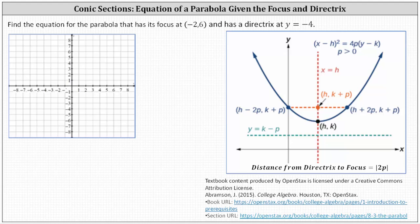We're asked to find the equation for the parabola that has its focus at negative two comma six and has a directrix at y equals negative four. Let's go ahead and plot the focus, negative two comma six. The directrix is a horizontal line, y equals negative four, which is here.